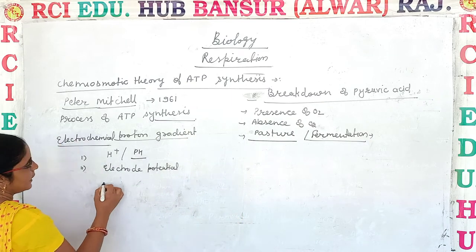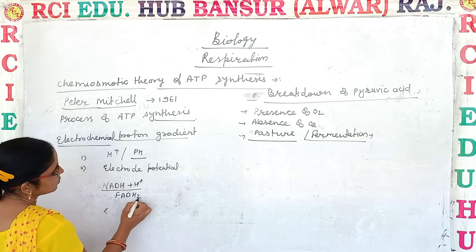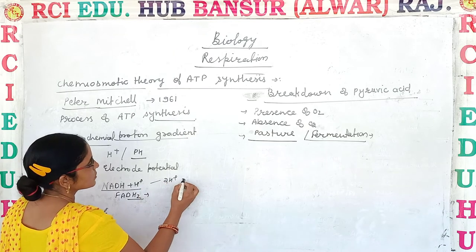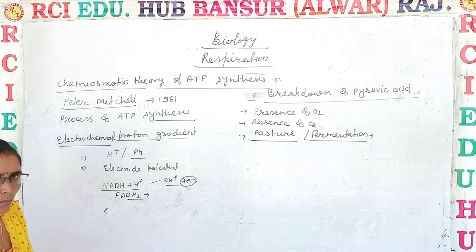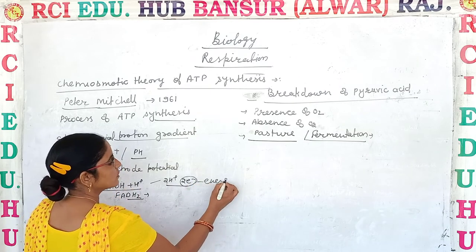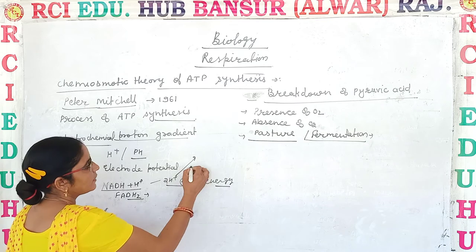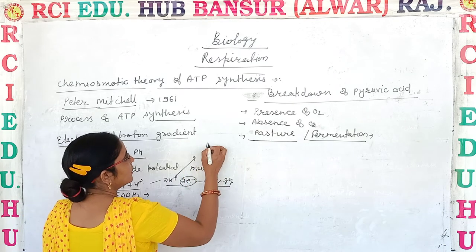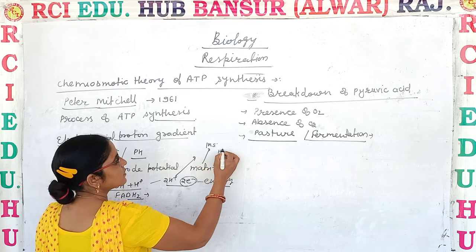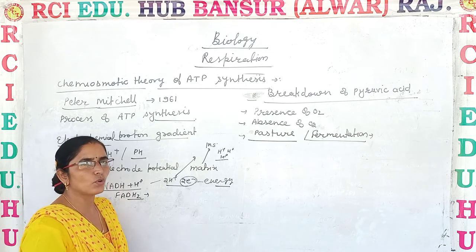He explained that when NADH+H⁺ and FADH₂ get oxidized, they produce protons and electrons. These electrons move through various complexes and energy is released in this process. That energy is utilized to pump the protons from the matrix to the intermembrane space. In the intermembrane space, the concentration of hydrogen ions — protons — is very high, due to which a proton gradient develops.